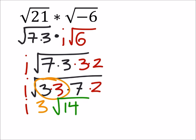And i times 3, again formally we should write this as 3i times the square root of 14. And that would do it.